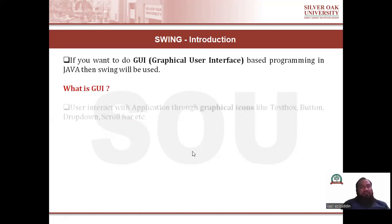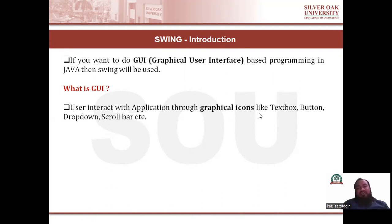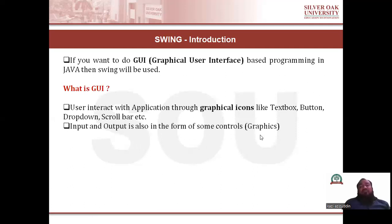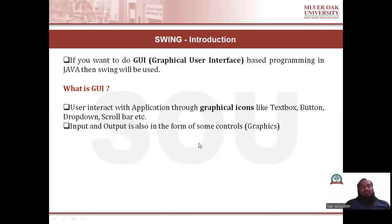Now what is GUI? The user interacts with the application through some graphical icons like text box, button, drop-down, scroll bar. If the user interacts with your application through some graphical icons and controls, that kind of application is called a GUI-based application. Input and output is also in the form of some controls. For input, a text box is used; for selection, a drop-down list is used; and for output, you can display output with the use of label controls. That is the GUI-based application.